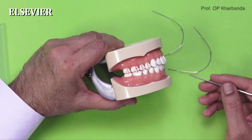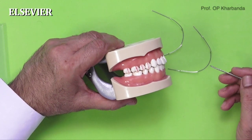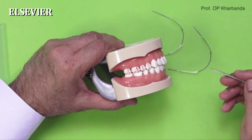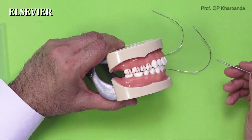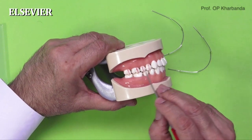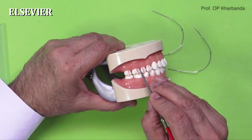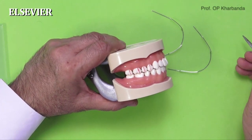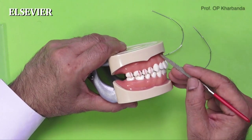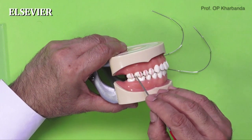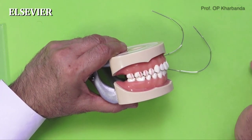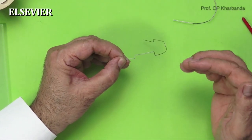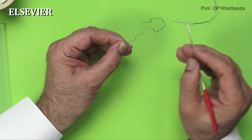The utility arch by Ricketts was originally suggested to be made in 0.016 x 0.022 blue Elgiloy wire. This particular arch is called a utility arch because it can perform more than one function at a time. For example, it can intrude your incisors, it can do retraction, and it can allow you to settle the buccal segment. The utility arch can be used both in the upper arch as well as in the lower arch.